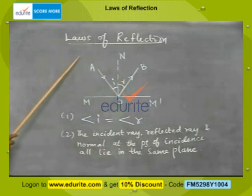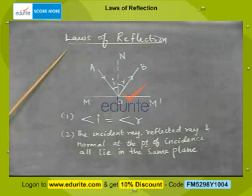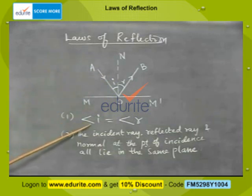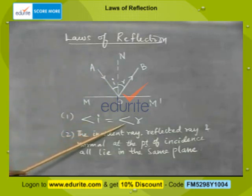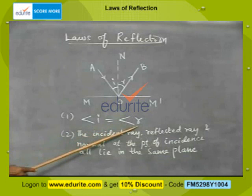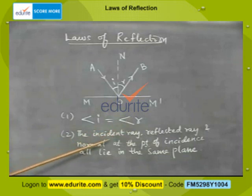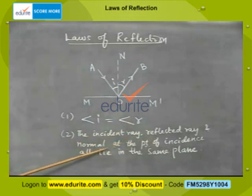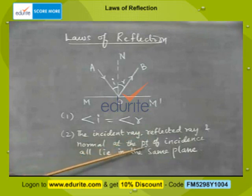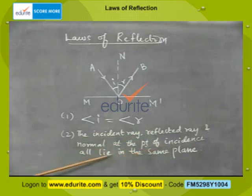There are two different laws of reflection. The first law: the angle of incidence is equal to the angle of reflection. The second law: the incident ray, the reflected ray, and the normal at the point of incidence all lie in the same plane.